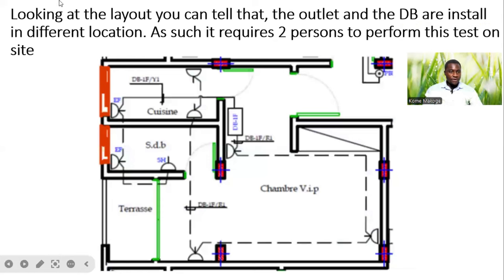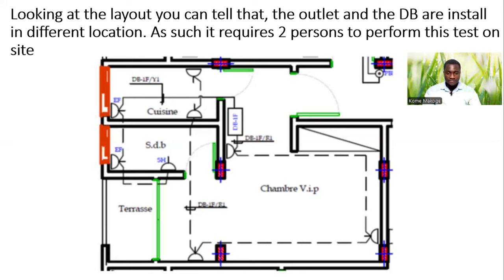Looking at the diagram or layout, you can tell that the outlet and the DB are installed in different locations. As such, it requires two different persons to perform these tests on site. We have different socket outlets installed in different locations, and our distribution board is far from all the different socket outlets. So we require two different persons: one person at the DB side and another person at the field side or at any of the different socket outlets that needs to be tested.